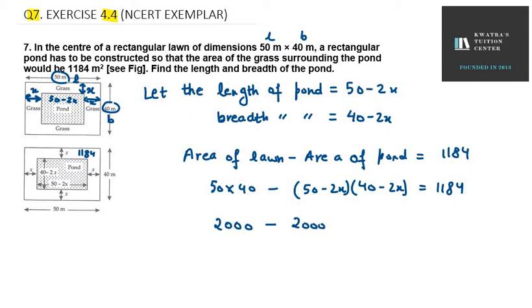50 into minus 2x, it will be positive because we have minus here. So 50 into minus 2x will be 100x. Then we have plus 80x. Then we have minus minus minus. That means minus 4x square equal 1184.